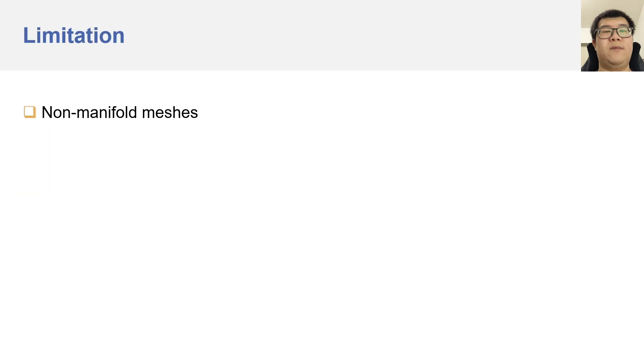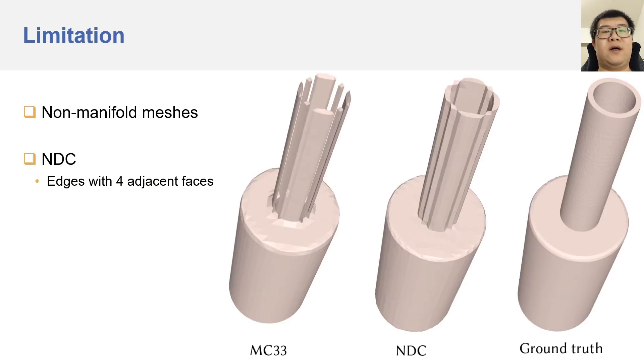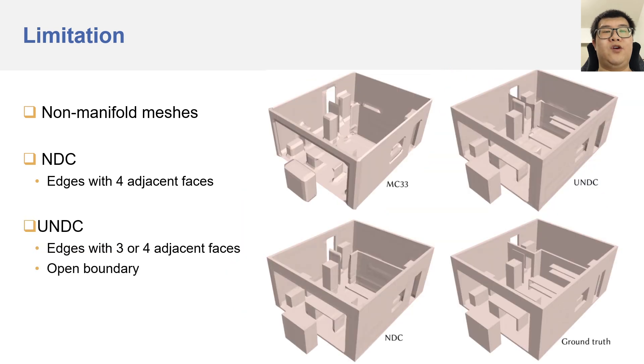The most prominent limitation of our method is that it can produce non-manifold meshes. For NDC, it could generate non-manifold edges with 4 adjacent faces, as shown here. For UNDC, because it does not have the watertight nature that NDC has, it could generate non-manifold edges with 3 or 4 adjacent faces, and boundary edges with 1 adjacent face. These non-manifold edges are useful when approximating the ground truth, but they may cause issues for downstream tasks.